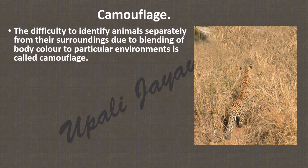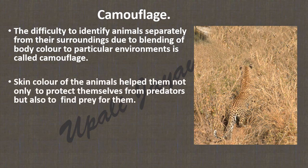Now we will define what camouflage is. The difficulty to identify animals separately from their surroundings due to blending of body colour to a particular environment is called camouflage. The skin colour of animals helps them not only to protect themselves from predators but also to find prey.